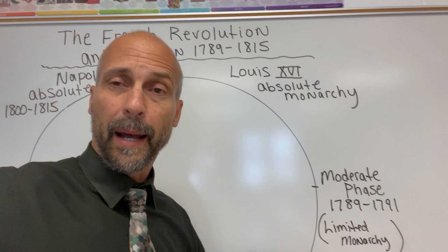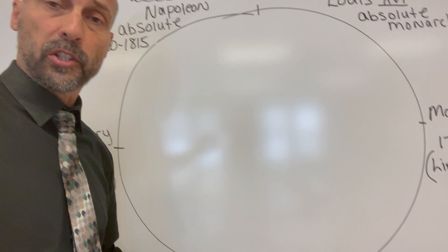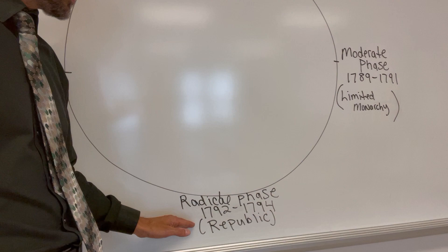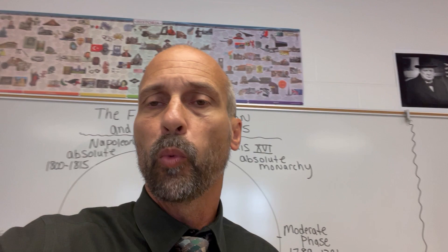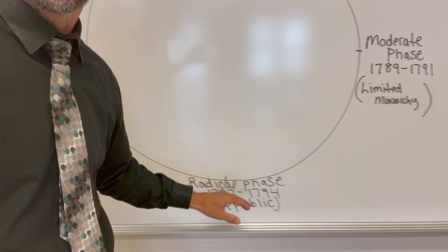France moves from an absolute monarchy to a limited monarchy. But then as the revolution takes a more radical or extreme turn, France's government is going to change. The radical phase — 1792 to 1794 — is going to see France become a republic. A republic is a form of government where the people hold the power along with their elected representatives; you do not have a monarch. So during the radical phase of the revolution, King Louis the 16th will be no more — I'll save how that all happens for a later video.